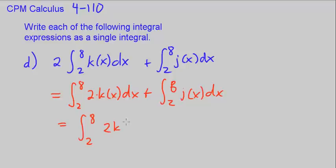We can just go ahead and add the functions. So it's 2kx plus j of x, put parentheses around that, dx.